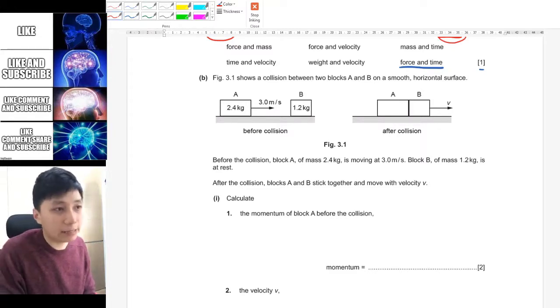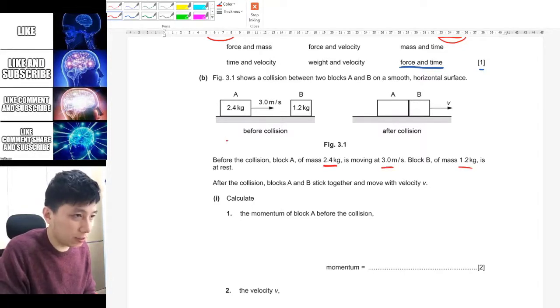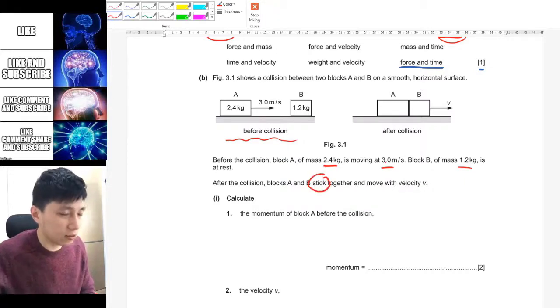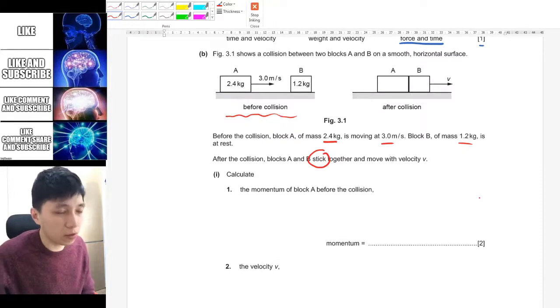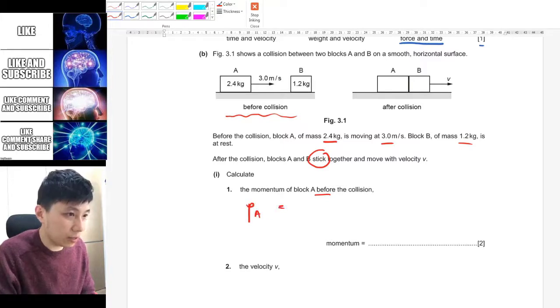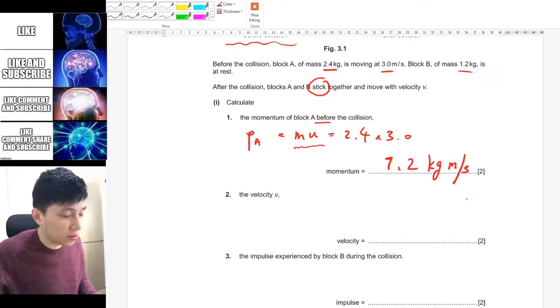Part B. They have given you the diagram very nicely. So if they didn't then you should have drawn it. So all this information is actually shown in this diagram. One important idea is they told you they will stick together after the collision. So that's something it will be useful for later calculation. For the first thing, the momentum of block A before the collision is simply mass times initial velocity. So mu is 2.4 times 3.0. The unit is kg meter per second. Make sure you put down the unit.